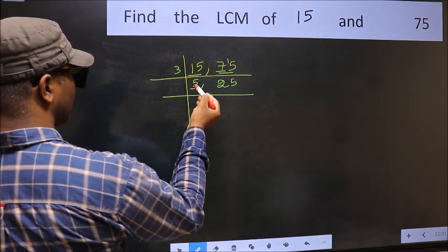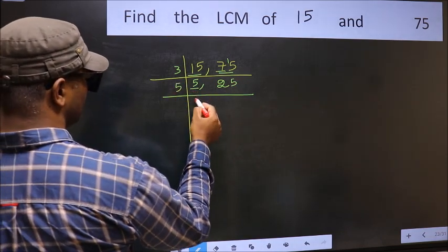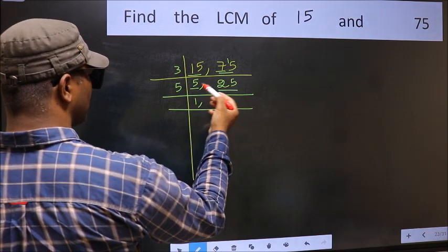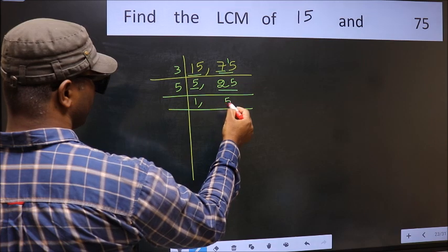Now here we have 5. 5 is a prime number, so 5×1=5. The other number is 25. When do we get 25 in the 5 table? 5×5=25.